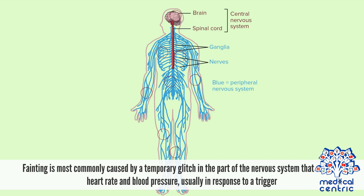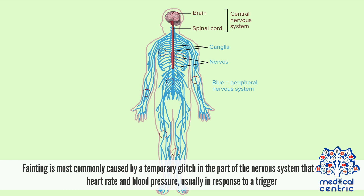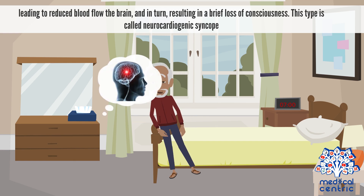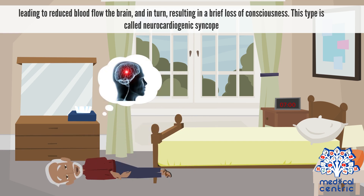Fainting is most commonly caused by a temporary glitch in the part of the nervous system that controls heart rate and blood pressure, usually in response to a trigger. This may cause the heart rate and blood pressure to drop suddenly, leading to reduced blood flow to the brain, and in turn resulting in a brief loss of consciousness. This type is called neurocardiogenic syncope.